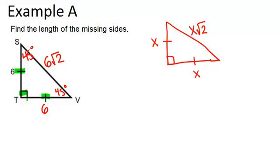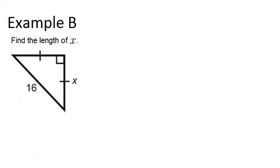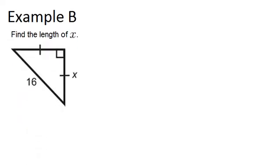Let's look at example B. We're asked to find the length of x and again we have two sides marked the same in a right angle so this has to be a 45-45-90 triangle.